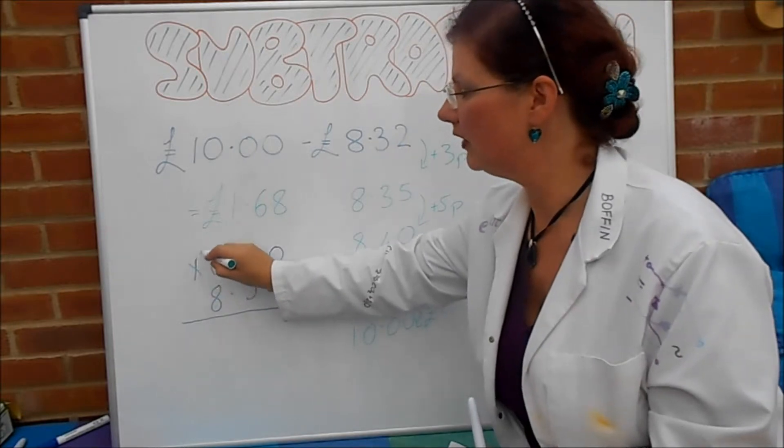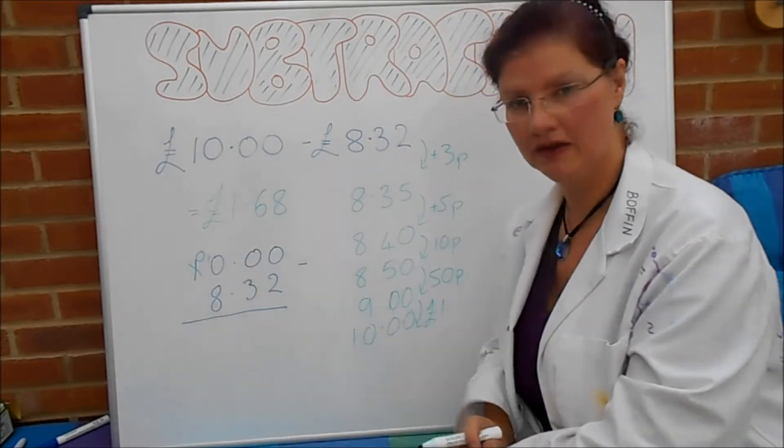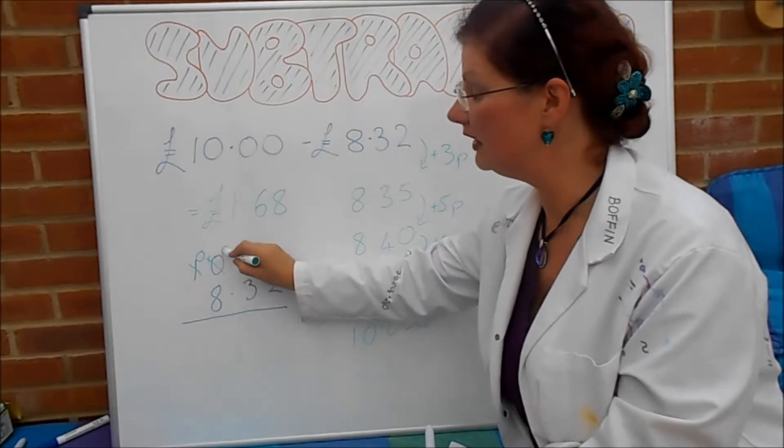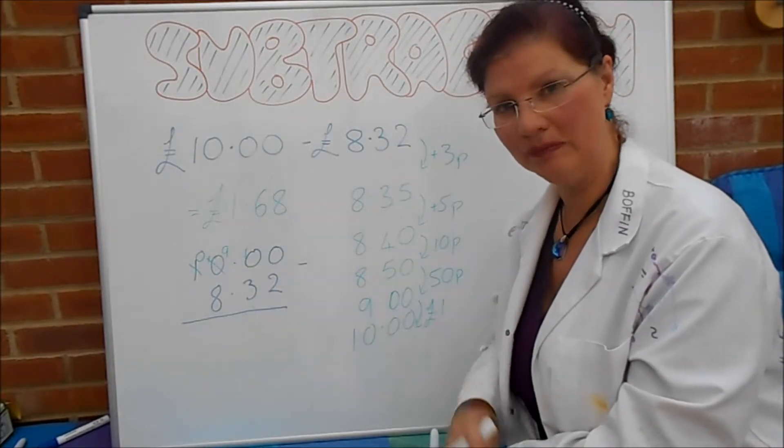Unpack one of these. So now there are 0 and there's 10 of those. Unpack one of the 10 which leaves 9 and gives you 10 in the next column.